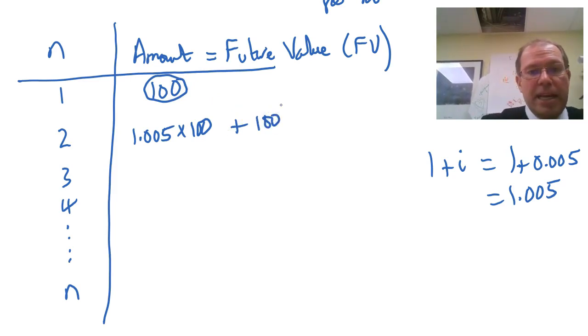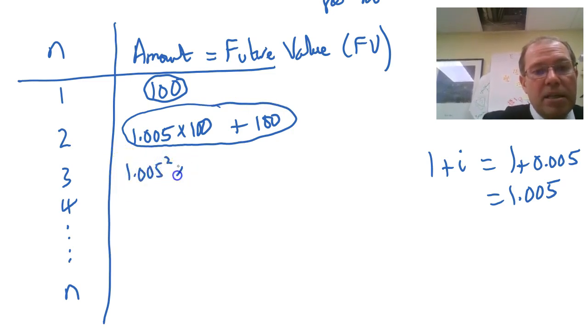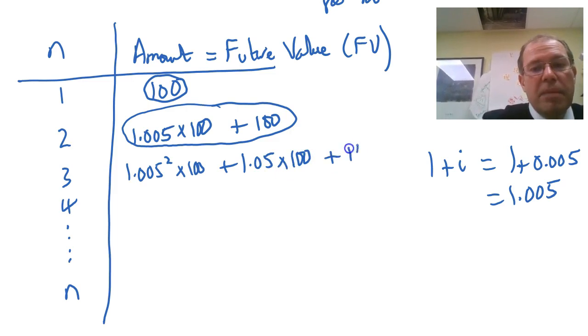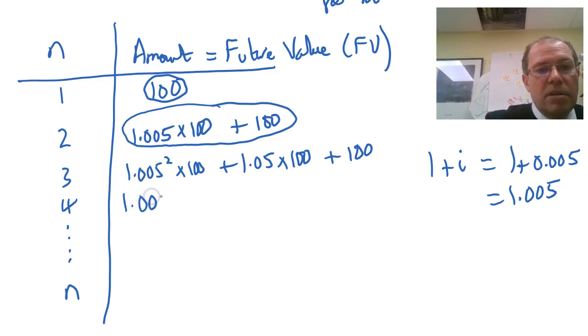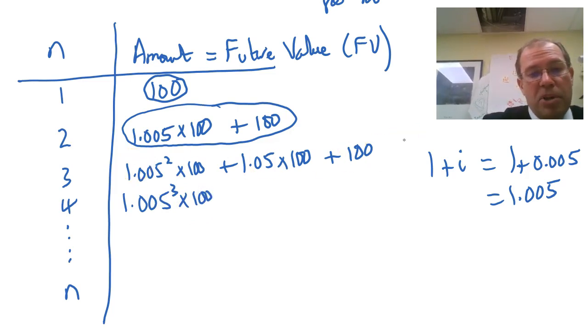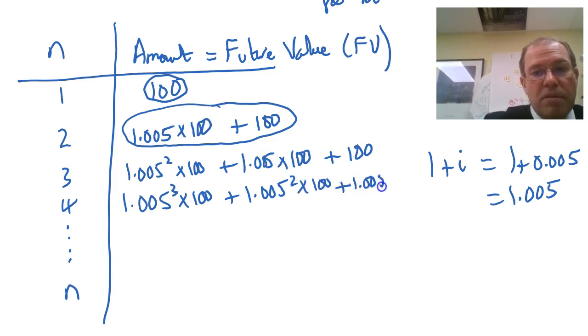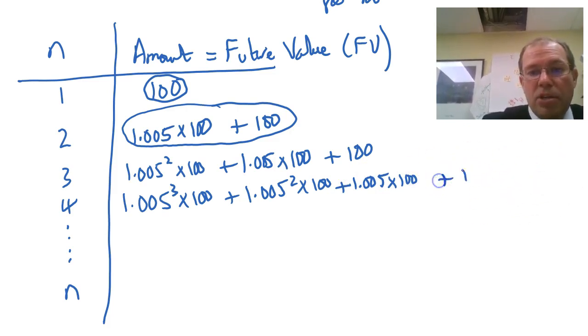In the third month, I'm going to get interest on everything that's in. So all of that has to be multiplied by 1.005. That would be 1.005 squared times 100 plus 1.005 times 100. And I'm going to put my monthly payment in. The fourth month, I would have 1.005 cubed times 100, so I'm multiplying all the third by 1.005 plus 1.005 squared times 100 plus 1.005 times 100, and then plus my new 100.